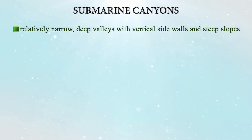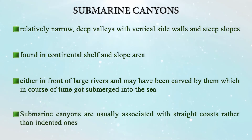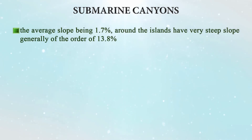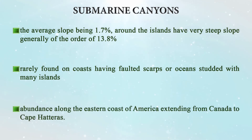Submarine canyons are relatively narrow, deep valleys with vertical side walls and steep slopes, closely resembling land canyons and valleys. They are found in the shelf and slope area, either in front of large rivers or carved by rivers that were subsequently submerged. Submarine canyons are usually associated with straight coasts rather than indented ones. The average slope is 1.7%, although around islands they can be as steep as 13.8%. They are rarely found on coasts with faulted scarps or oceans studded with islands. There is an abundance of submarine canyons along the eastern coast of America extending from Canada to Cape Hatteras.